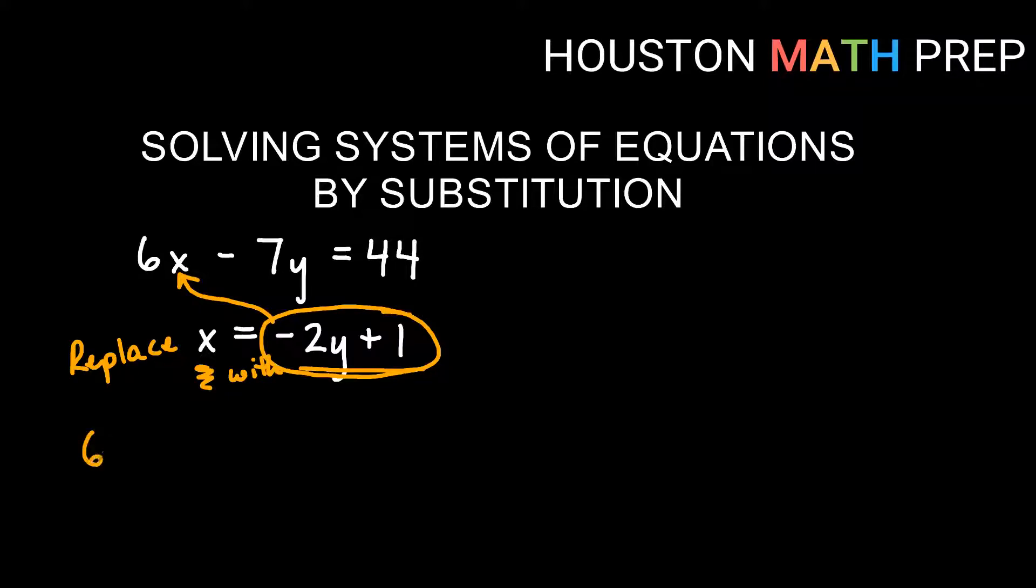6x becomes 6 times negative 2y plus 1. You really want to put parentheses around it when you substitute anything in just to be sure if you need to distribute or anything like that. Be careful with your signs and all that. So we plugged in. We replaced x with negative 2y plus 1. Now I just distribute like before. So 6 times negative 2y is negative 12y. 6 times plus 1 would be plus 6 minus 7y equal to 44.